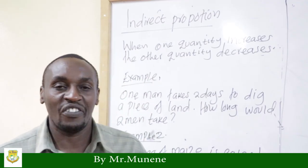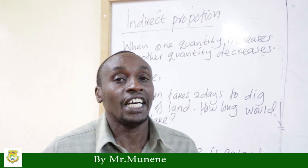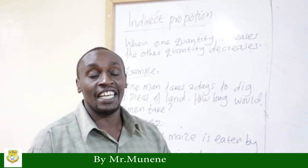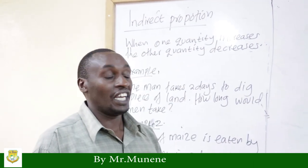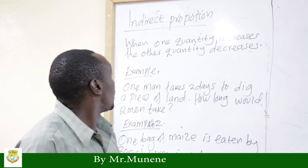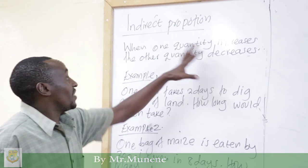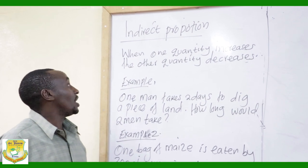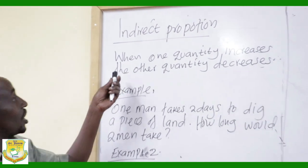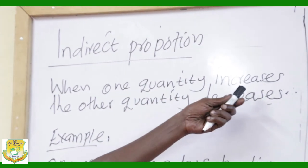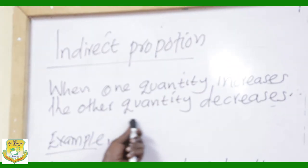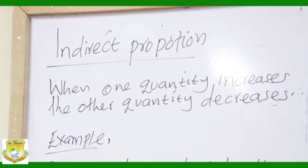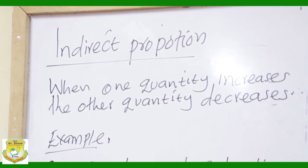Welcome. Today we are going to talk about indirect proportion. The definition of indirect proportion: when one quantity increases, the other quantity decreases. We have examples here to work out.